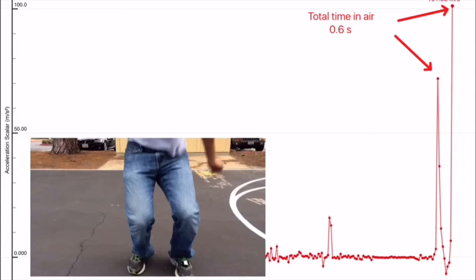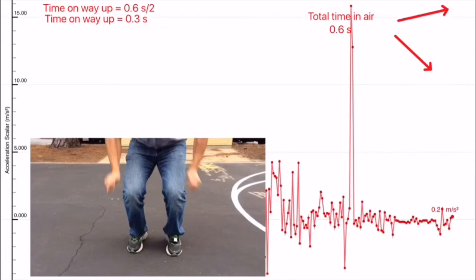Use these readings to find the total time you are in the air. Divide that by two to find the time you are on your way up.